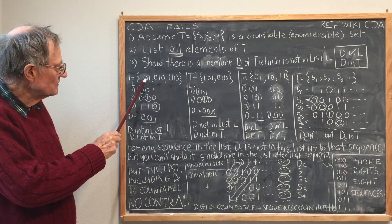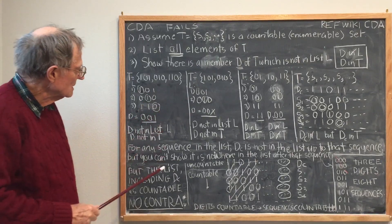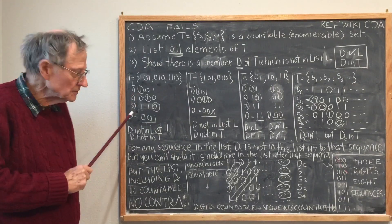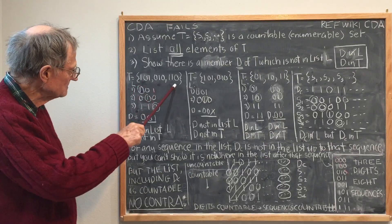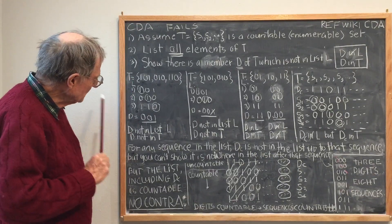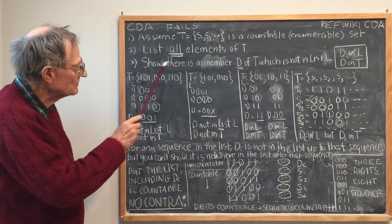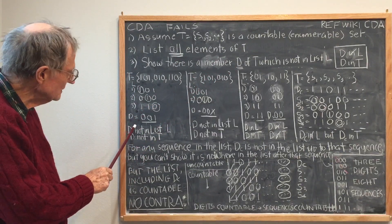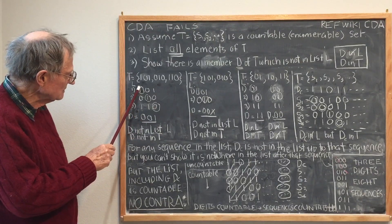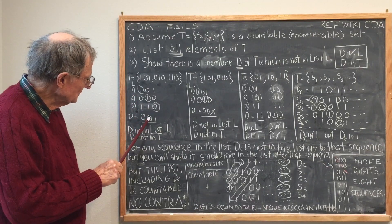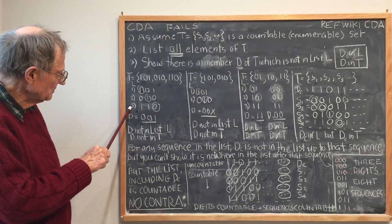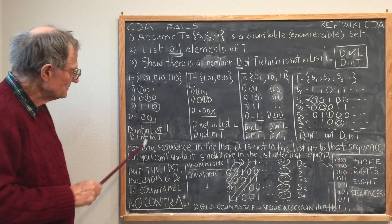For example, if I take a set T equal to these three sequences, then I want to prove they're uncountable. So the first step is to list them, assuming they're countable. Here's the list of these three members of T. Then I'm going to create a member D, or a sequence D, which is not in this list. The first digit of D is going to be the opposite of the first digit of S1, the second digit of D is going to be the opposite of the second digit of S2, and the third digit of D is going to be the opposite of the third digit of S3.